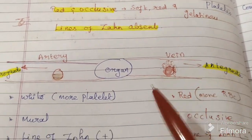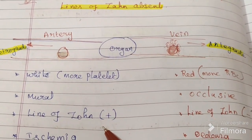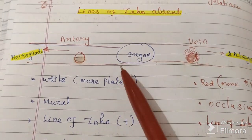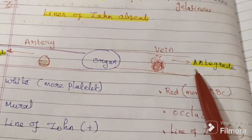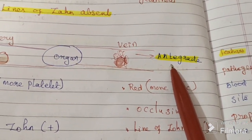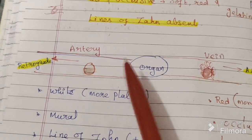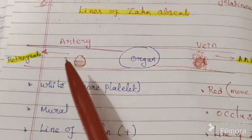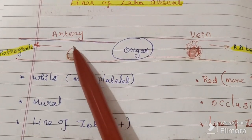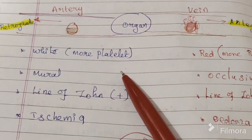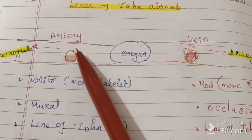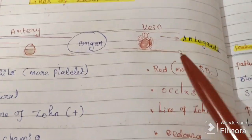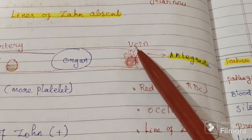Lines of Zahn are present in arterial thrombus due to alternating platelets and RBCs, but not in venous thrombus. Blood flow in arterial thrombus is in a retrograde manner — that means opposite to normal blood flow. Because arterial thrombus is only partially affecting the vessel as a mural thrombus, it causes ischemia. Complications for arterial thrombus are ischemia and infarction.